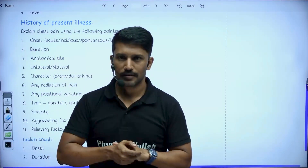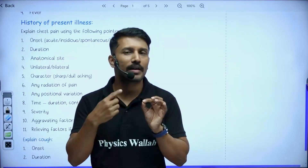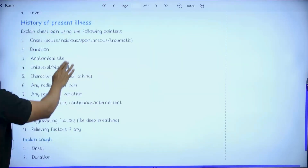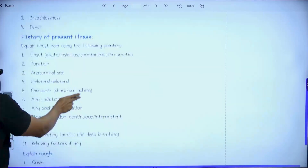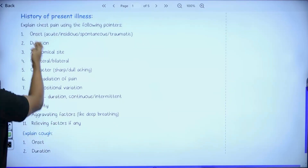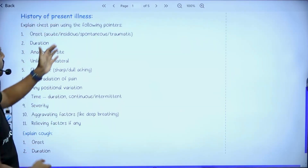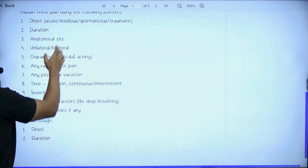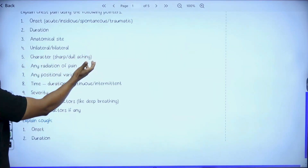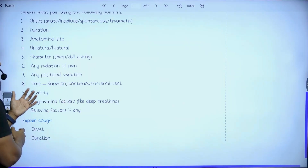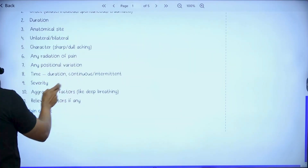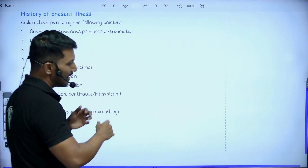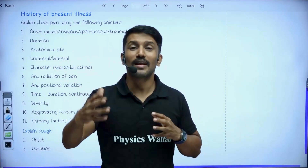Then we go to the history of present illness, which is where most professors catch you for mistakes. For a student, information placed in the history of present illness is generally random and not structured. But this app helps you get it structured. For example, for the chief complaint of chest pain, you should explain it with the following pointers: onset, and aggravating and relieving factors. When you present chest pain under these structured headings to your teachers, it gives a clear idea of what the patient is going through and helps make a better diagnosis.